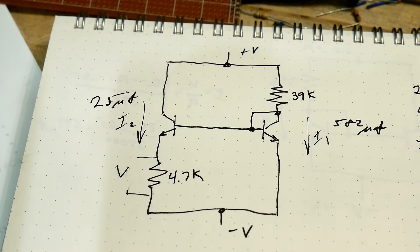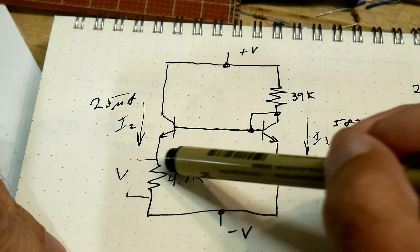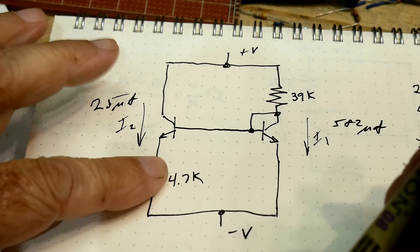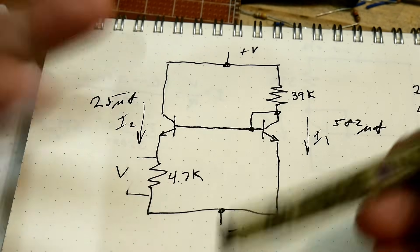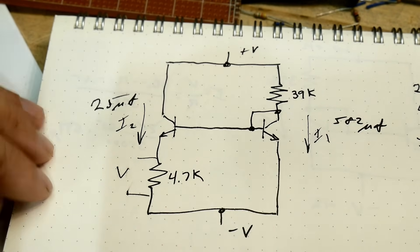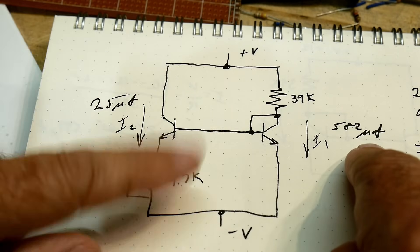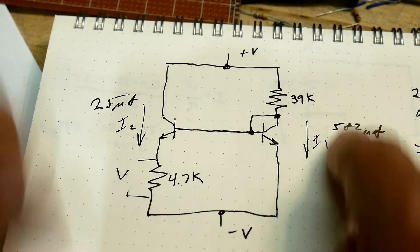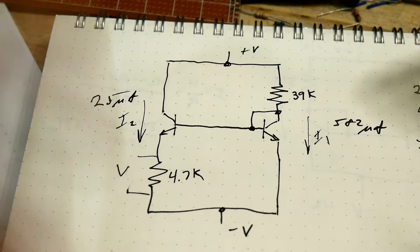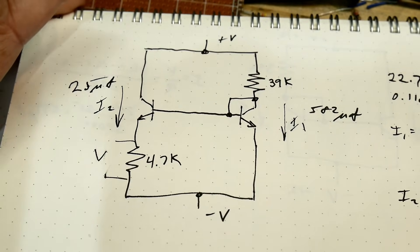This is a modified current mirror — it's not a Wilson mirror. By adding that resistor you introduce a multiplication factor: you start with 582 microamps and mirror it over, ending up with only 25 microamps. And if you change the resistor, it doesn't scale linearly — it changes logarithmically. So again, just measure it. That's my takeaway: just measure it.